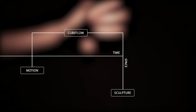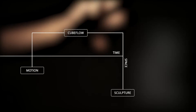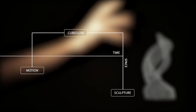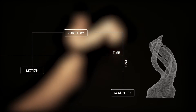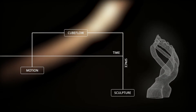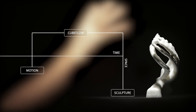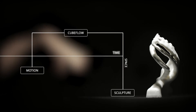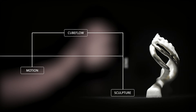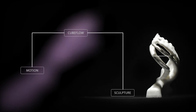Shapes of movements in time become visible as virtual 3D objects. These objects find their reentry into reality when they are materialized as real sculptures by 3D printing. CubeFlow allows to transform the dynamics of motions in time into a static object in space. Changes in time transubstantiate into space.